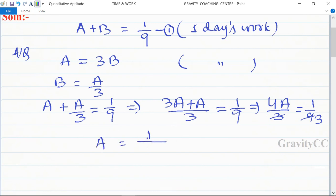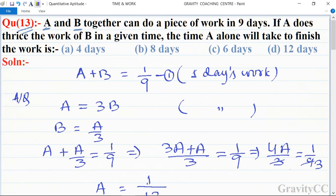A is equal to one upon twelve. So A can do the work in twelve days, which is the required answer. So in this question, option D is the correct answer.